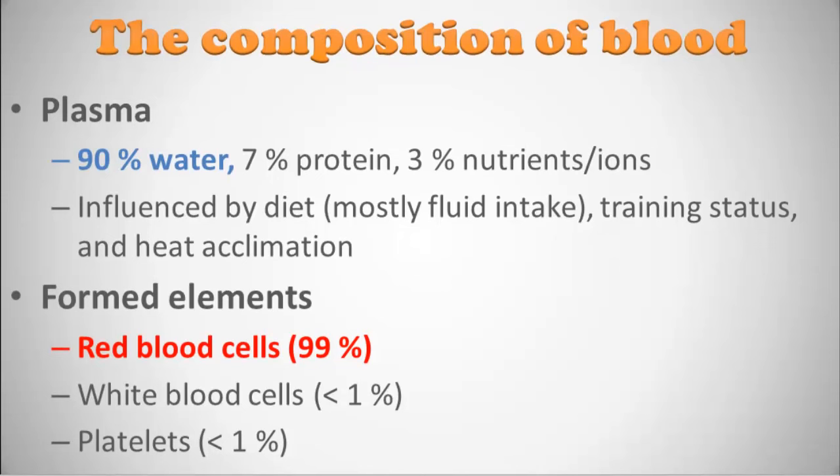Plasma is mostly water — about 90% water — and there are some proteins and nutrients like carbohydrates and glucose. What influences plasma the most is largely your diet and primarily the amount of water that you drink or don't drink. Exercise can also influence it because you sweat, and water moves out of your plasma through your skin and dissipates as it evaporates, cooling your skin.